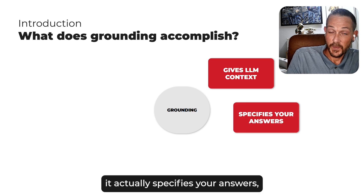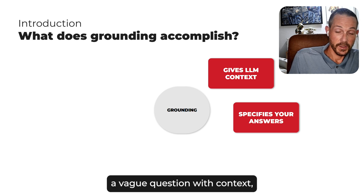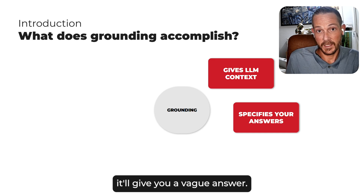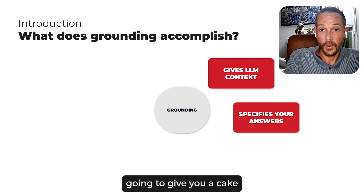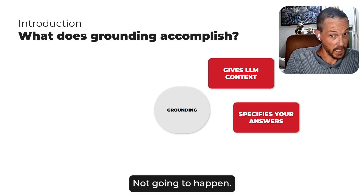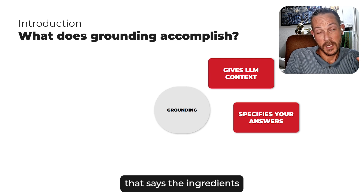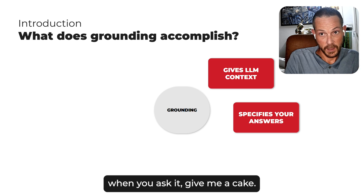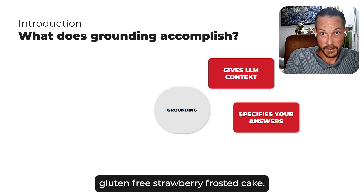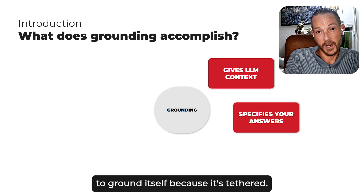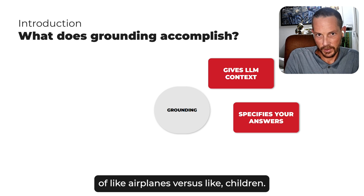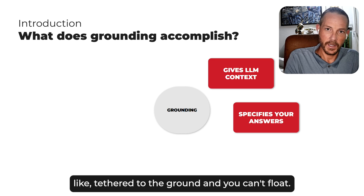This is what I mean when I say grounding actually specifies your answers. If you ask a vague question with context, it will give you a specific answer. If you ask a vague question without context, it'll give you a vague answer. For instance, if you ask it to bake you a cake, it's going to give you a cake — but it's not going to give you a chocolate-frosted, gluten-free strawberry cake. If you give it grounded context — the ingredients you have and your preferences — when you ask for a cake, it will specifically give you a chocolate-flavored, gluten-free, strawberry-frosted cake. This is the power of grounding: it's tethered, it's grounded, it can't fly away.